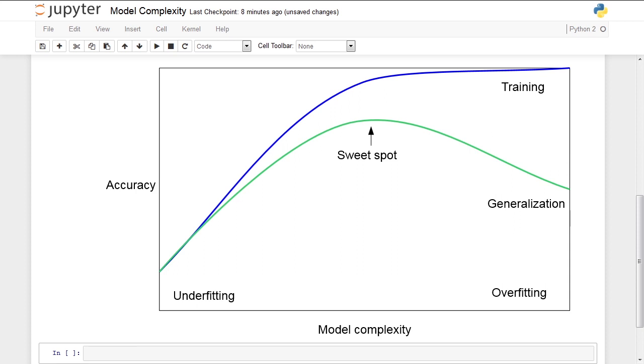If we increase the capacity or flexibility of our model, we will be able to do better and better on our training data. However, if we make our model too flexible, it will learn about the noise and the particularities of our training data set, and what it will learn will not generalize to new unseen data anymore.